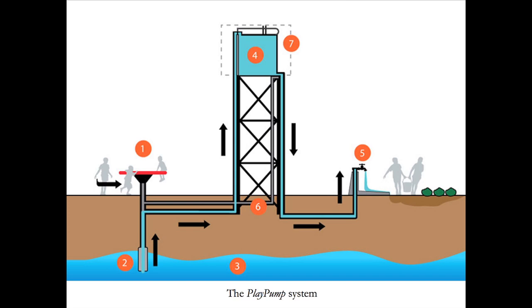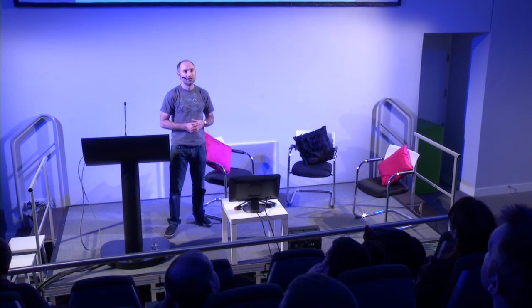This is the way the play pump works: children play on the roundabout, it pumps water up to the water tank, and then people can draw water from a tap nearby. So it was presented as almost something for nothing — the idea of an essential good achieved without labor. Children's play would happen anyway, and water would, as a byproduct, be generated, and then the community could collect water at the end of the day. So it was a very attractive proposition.